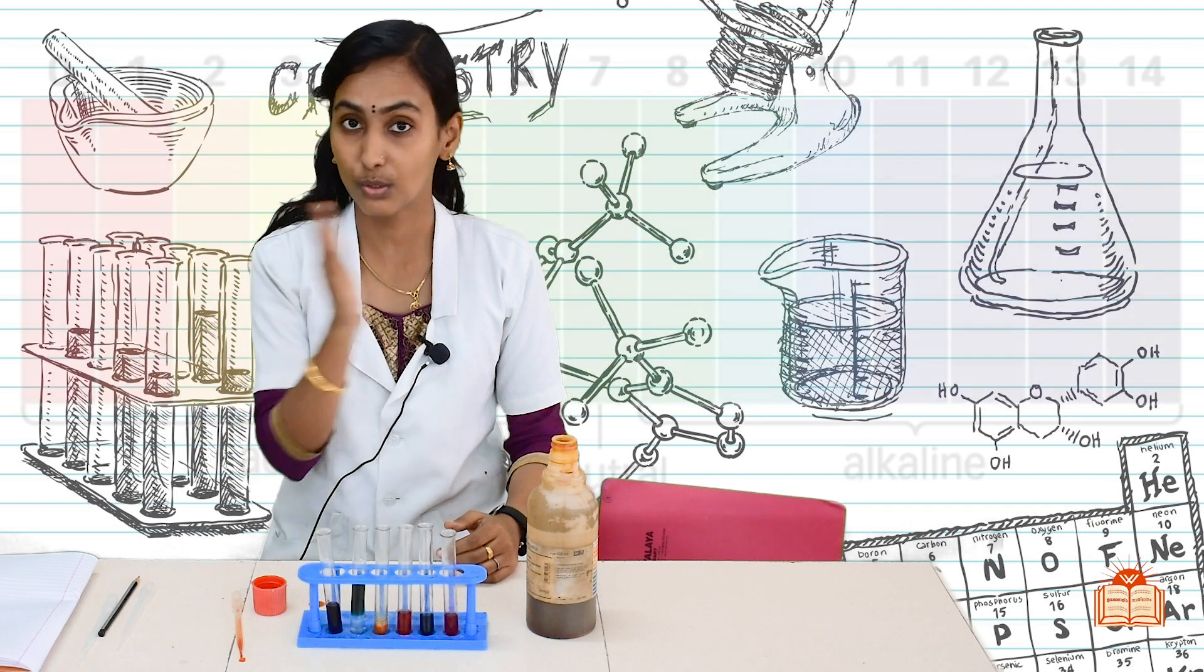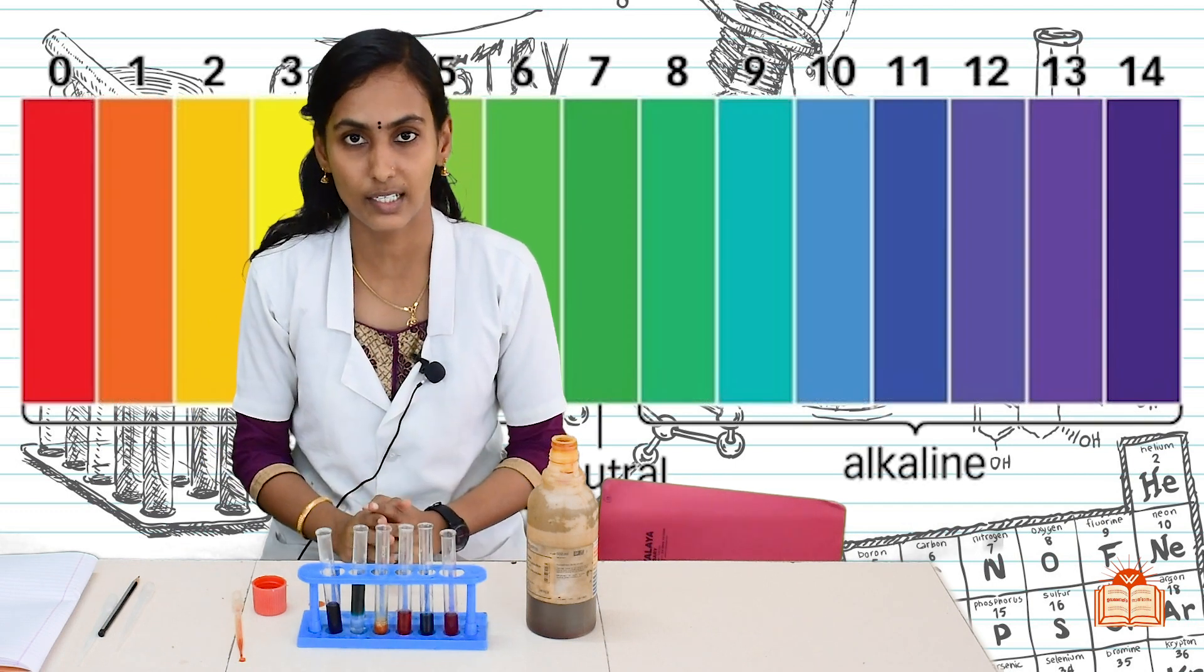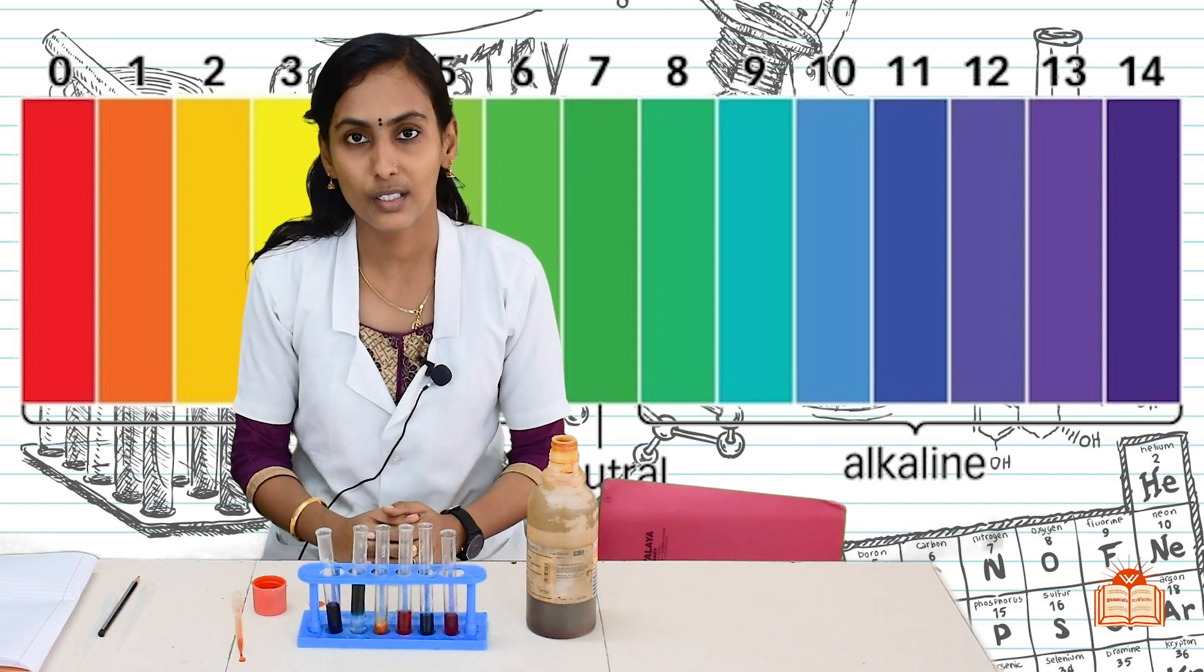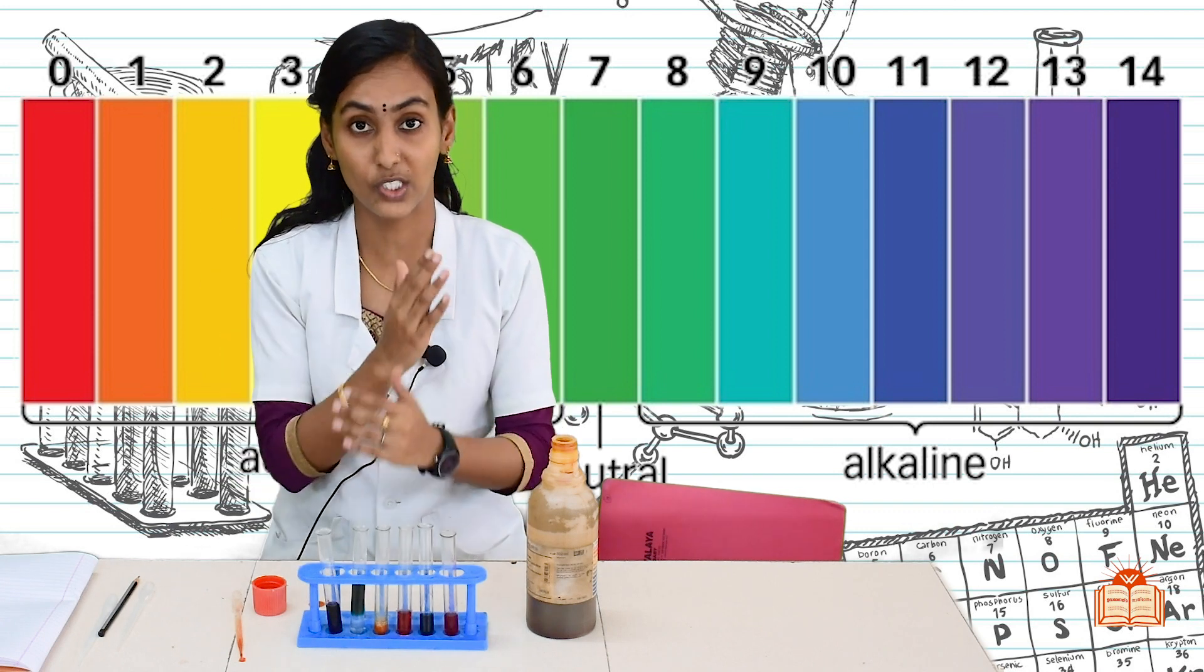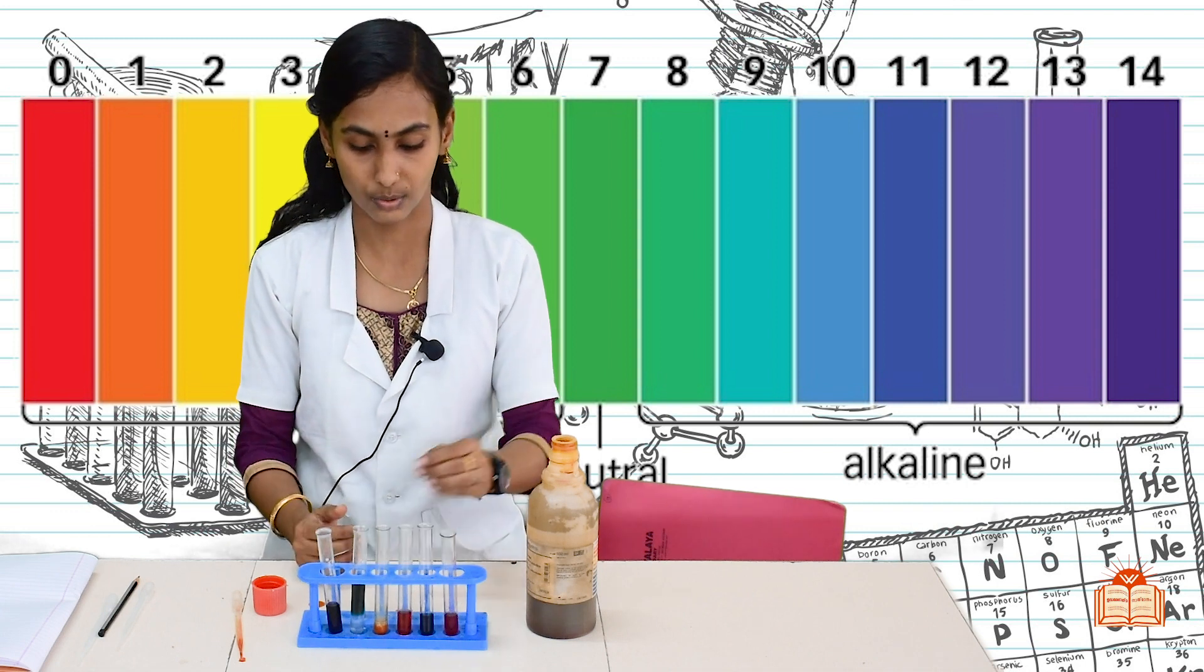From pH 14 to 0, pH 14 is violet, then near to 0 it is red color. So VIBGYOR, it is like VIBGYOR. Green represents the neutral solution.